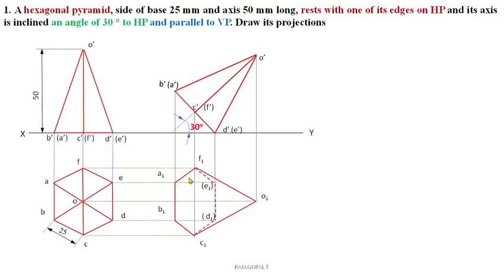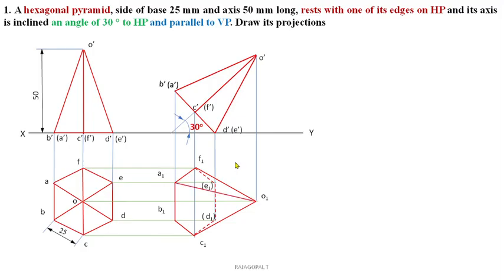Now the hexagon is completed — the base is completed. The base is the hexagon surface and it is completed. Now we can go for the slant edges. O'A', O'B' will be visible from the top view. O'A' and O'B' can be seen from the top view, so they have to be joined by means of continuous thick lines.